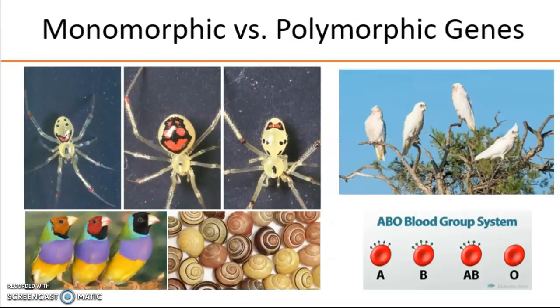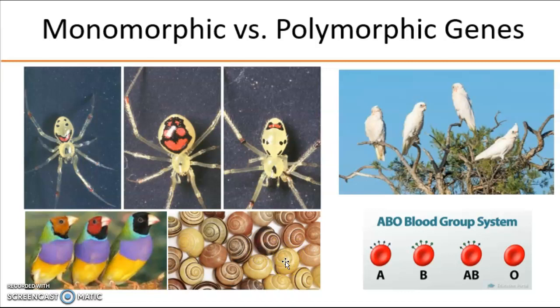When we talk about populations, we're also concerned with the genes within that population and whether they are polymorphic or monomorphic. We've talked about polymorphism before when we talked about mutations, but it doesn't always have to be a mutation. These spiders are all the same species and can breed with each other, but they have different alleles in that population that cause them to look a little different. Same thing with these birds and the shells on the snail — same organism, but different genes give them a distinct phenotype.